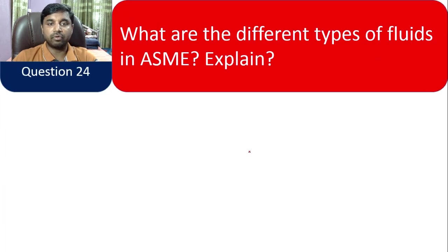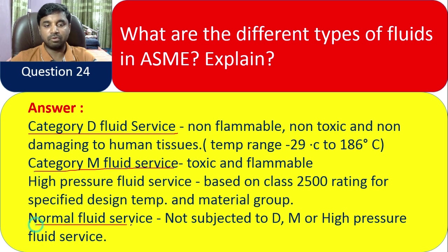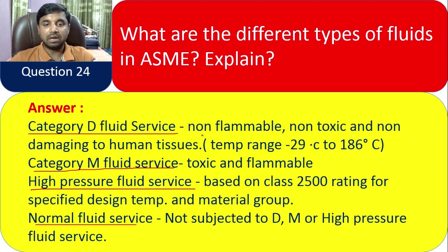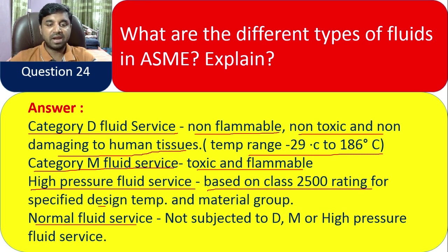Question 24: What are the different types of fluid services in ASME? Category D fluid service is non-flammable, non-toxic, and non-damaging to human tissues, with temperature range of -29 to 186°C. Category M fluid service is toxic and flammable. High pressure fluid service is based on Class 2500 rating for specified design temperature and material group. Normal fluid service is not subjected to Category D or M, and is also non-toxic.